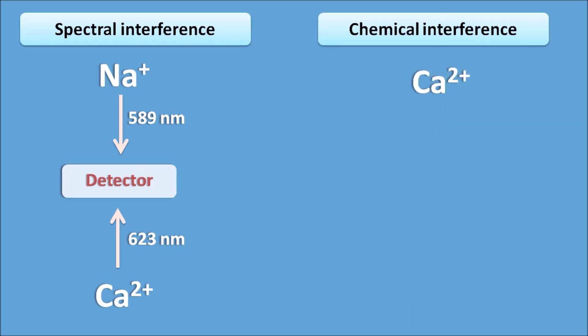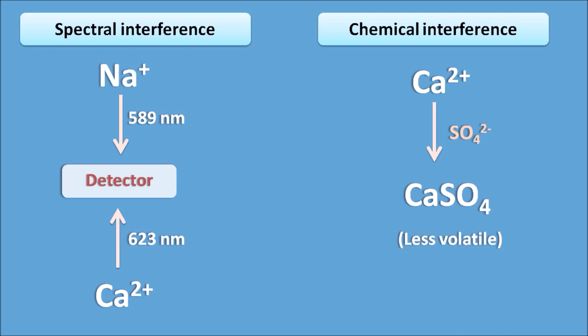Chemical interference is caused by anions. For example, if we are studying calcium and the solution contains sulfate ions, calcium forms calcium sulfate. Calcium sulfate is less volatile and cannot be converted into a gaseous ionic state, which decreases absorption or emission — this is chemical interference. Because this interference is caused by an anion, it is also called anionic interference. The right answer is that chemical interference is mainly due to formation of less volatile compounds like calcium sulfate.